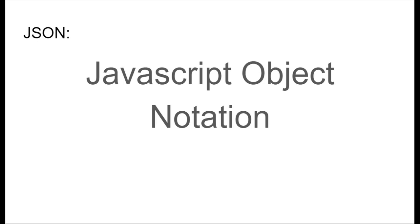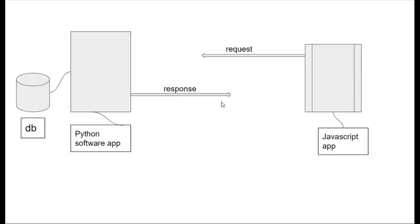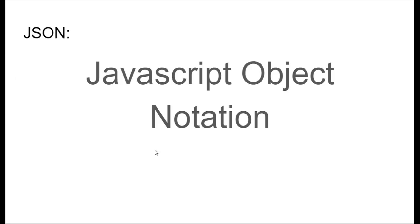Whatever information the client application wants to get from the server is defined by the endpoint of the API. Note that API communication is one-directional — only one of the applications can make requests. One application has to be a server with a database containing some kind of information, while the other is a client or front-end application. The request comes from the client while the server gives back the response.